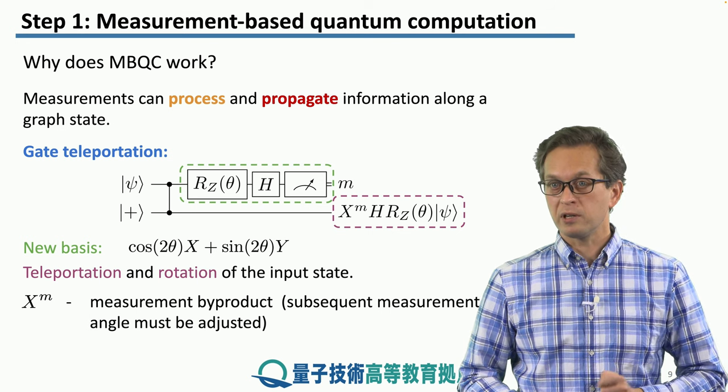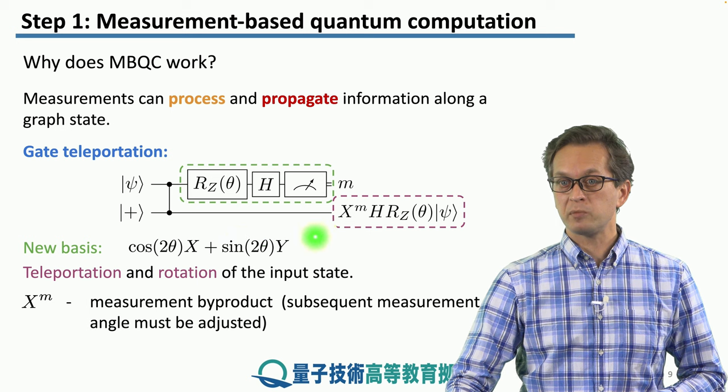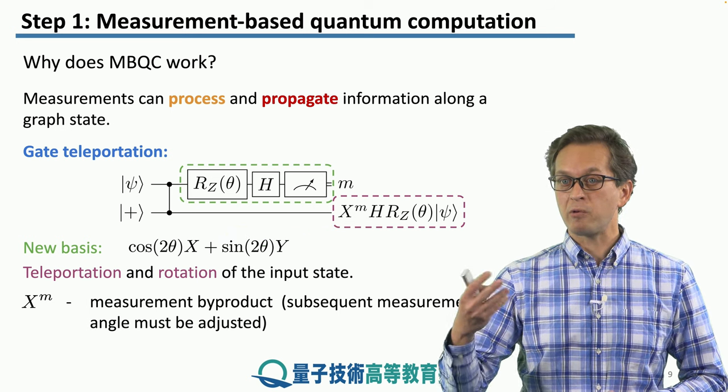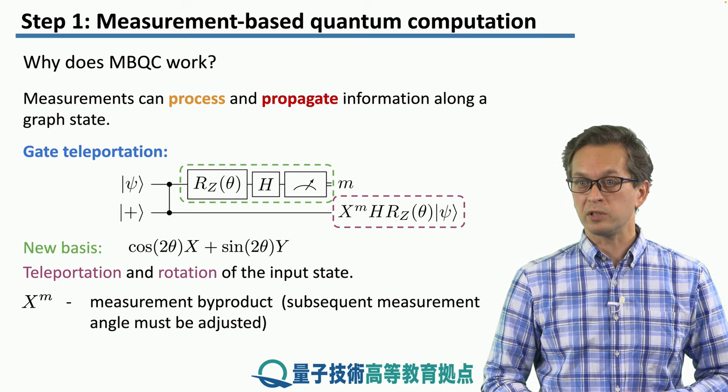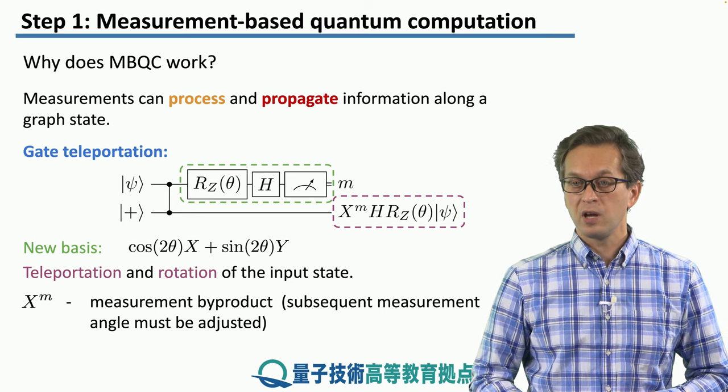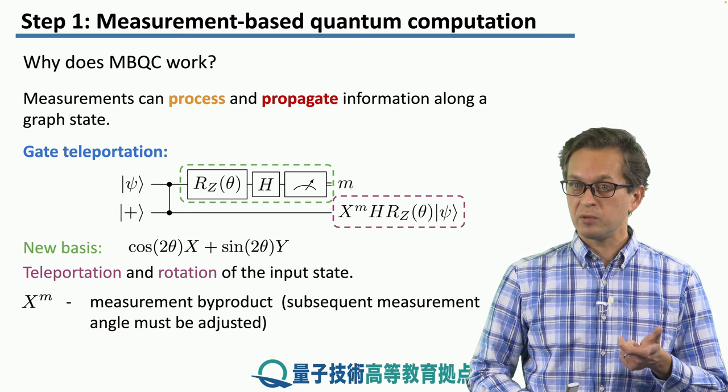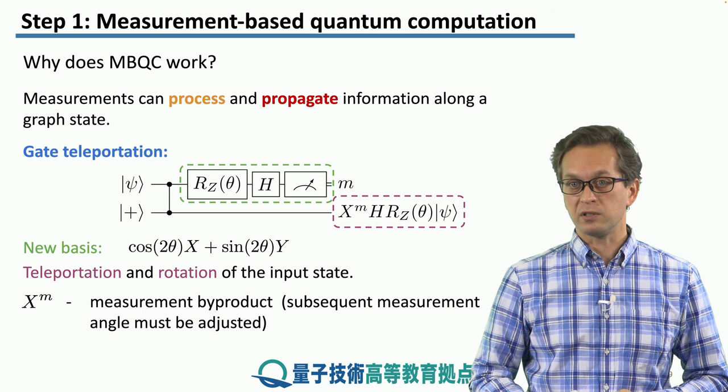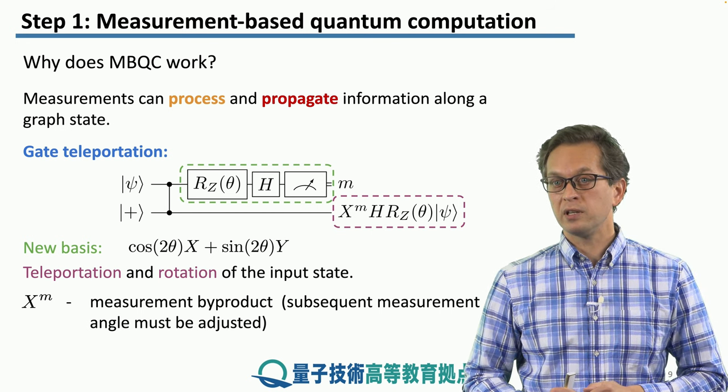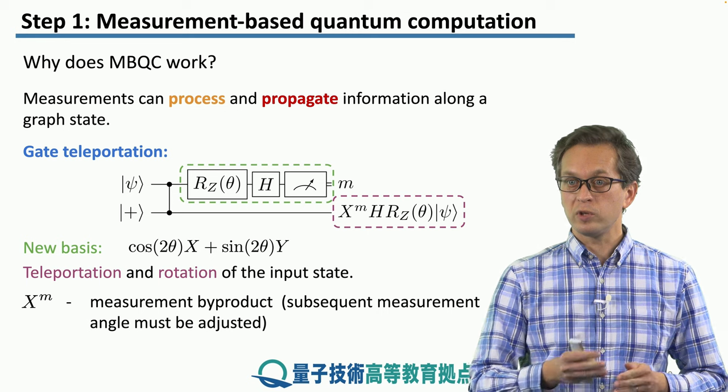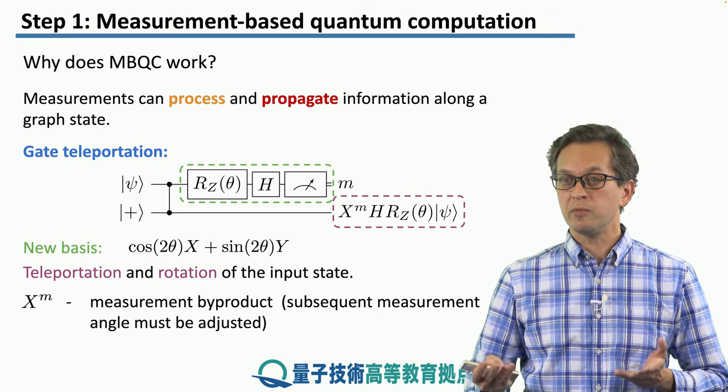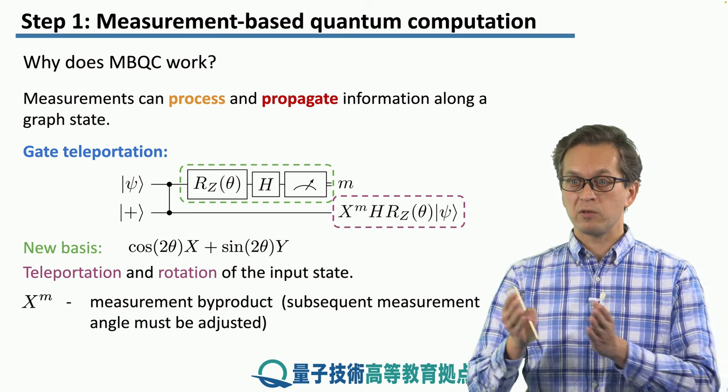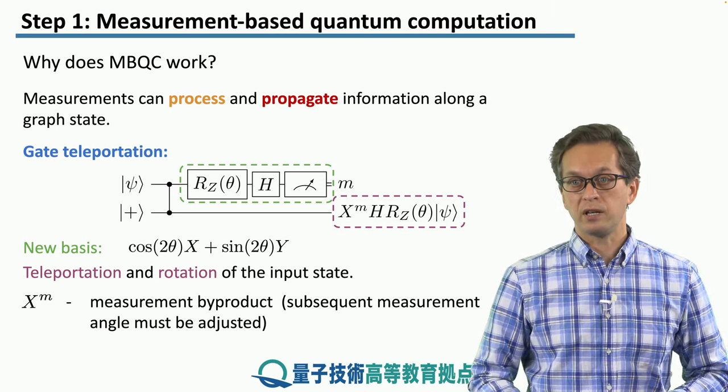Also, a particular feature of MBQC is that we have these measurement byproducts, these unitary gates X to the power of m, where m is the measurement outcome of our measurement on the previous qubit. We have to take this into account by subsequent measurement angle and adjust this angle if we want to continue processing information. This unavoidably introduces an ordering to which qubits can be measured between which, and meaning that the subsequent measurements must be adaptive. We must know the outcome of previous measurements before we can measure the next following qubits.